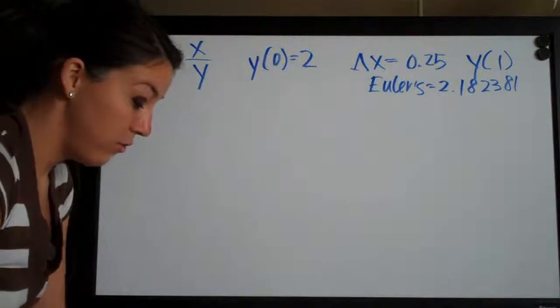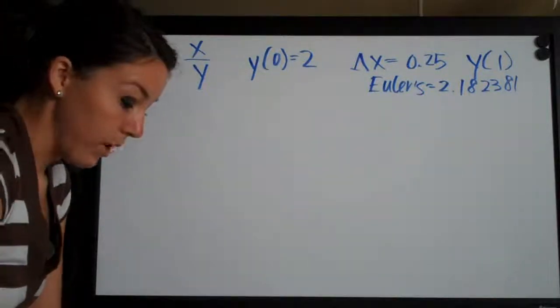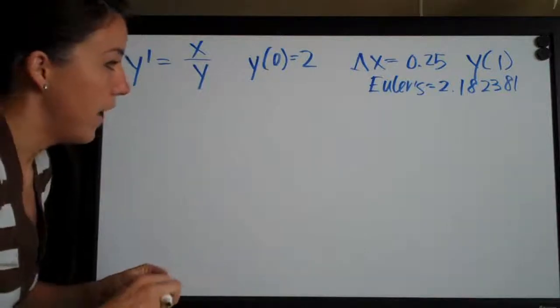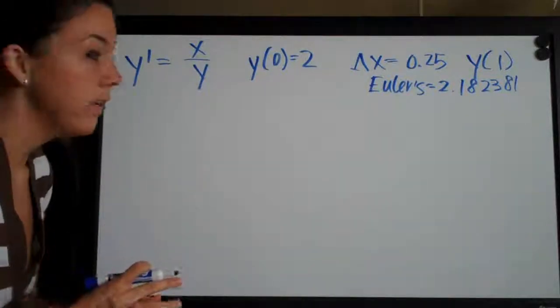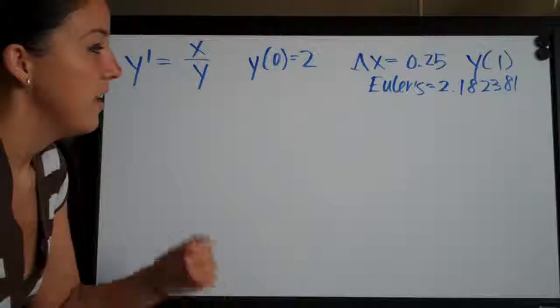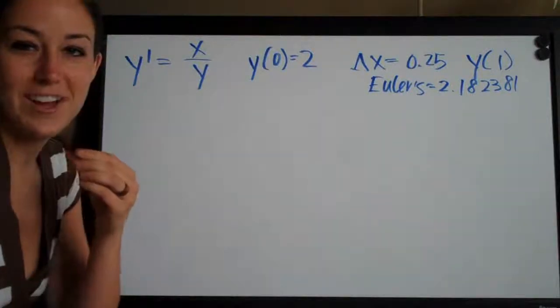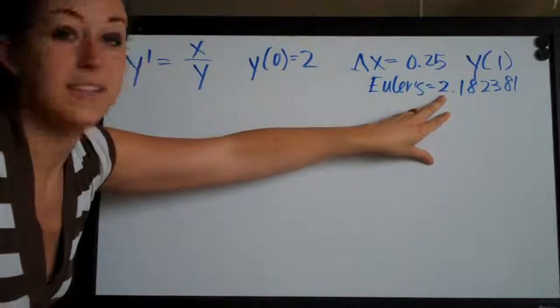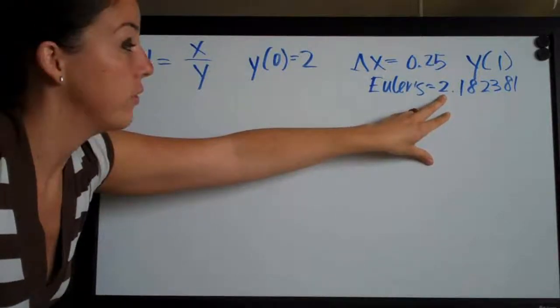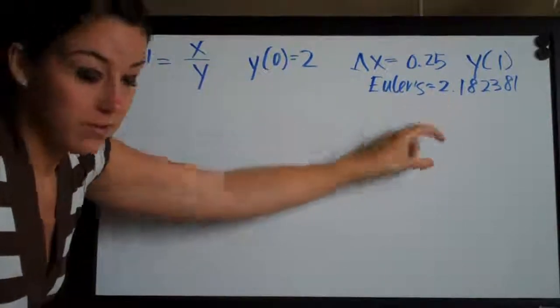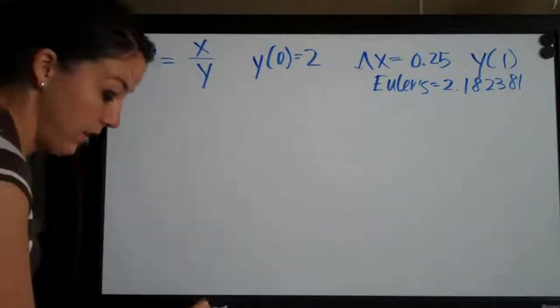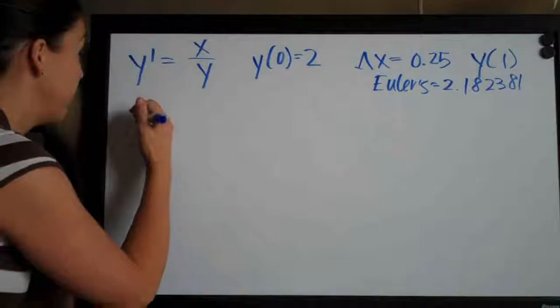They've also asked us to check our answer by actually solving the equation and computing y(1), which will give us an exact answer. So it will be interesting to see how much the exact answer will differ from the Euler's method approximation. So let's go ahead and check it another way. We're actually going to solve the equation this time.